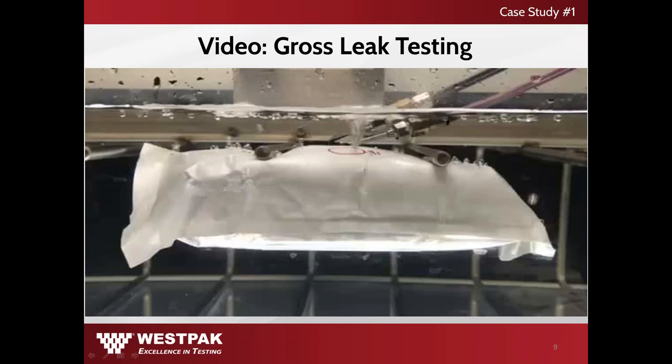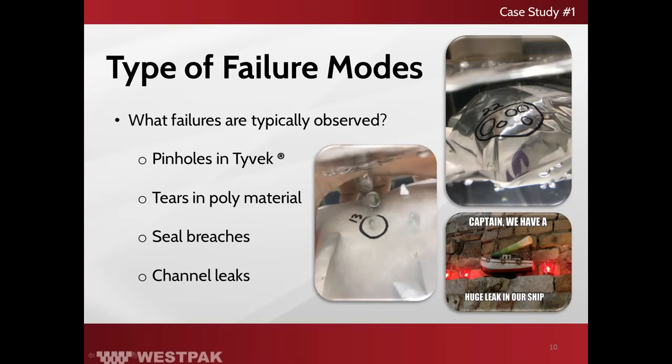This video here shows a leak on the Tyvek layer of the pouch. Because Tyvek is porous, bubbles will sit on the surface of the material. To correctly identify a failure, a constant stream of bubbles will be released from the punctured or breached area of the pouch. Common types of failures that are typically observed during gross leak detection include pinholes in the Tyvek material, tears in the poly material, as well as seal breaches and channel leaks.